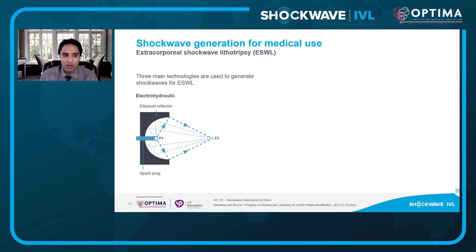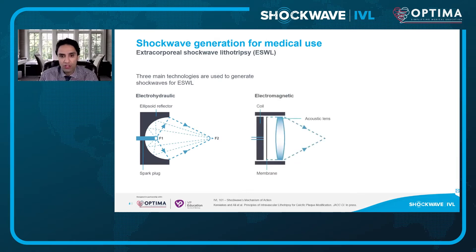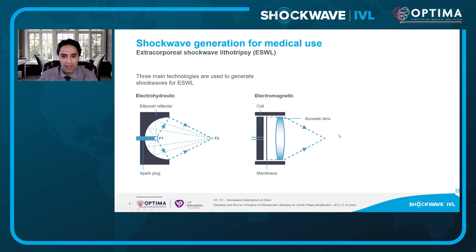Electrohydraulic energy is the important one because that's predominantly the one used in shockwave IVL. There are other methodologies, including electromagnetic. In an electromagnetic system for shockwave development, you have an electric coil, and as that coil generates energy, it bends a membrane — kind of like a dome — just in front of it, creating a focused energy which is then focused either by a parabolic reflector or by a lens that focuses the energy into increased amplitude.